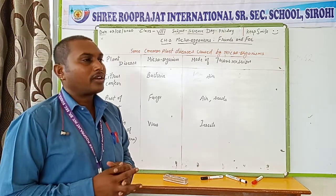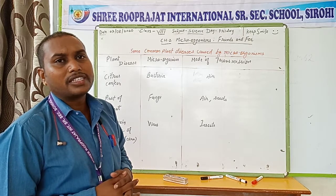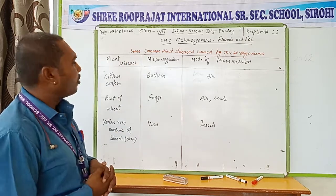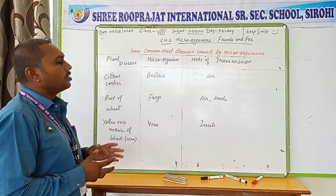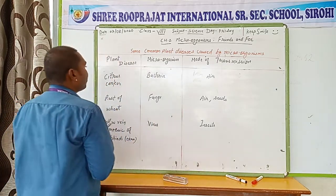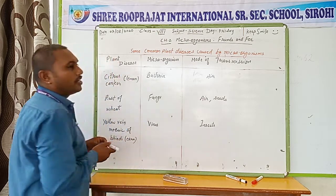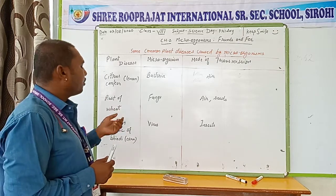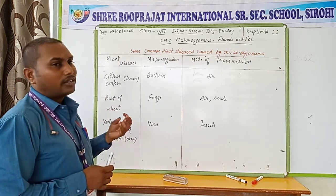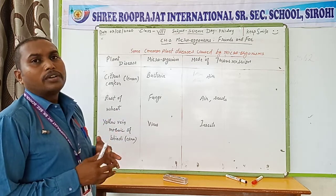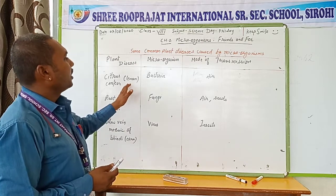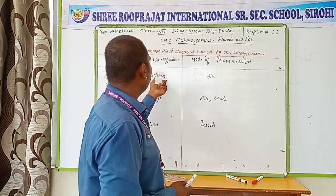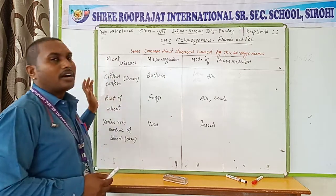Next, diseases caused by microorganisms in plants are shown in a table. The first plant disease is citrus canker, which occurs in lemon plants. The lemon leaves become yellowish in color with yellow spots, and due to this, flowers and fruits do not develop on the plant. It is caused by bacteria which can be transmitted through the air.